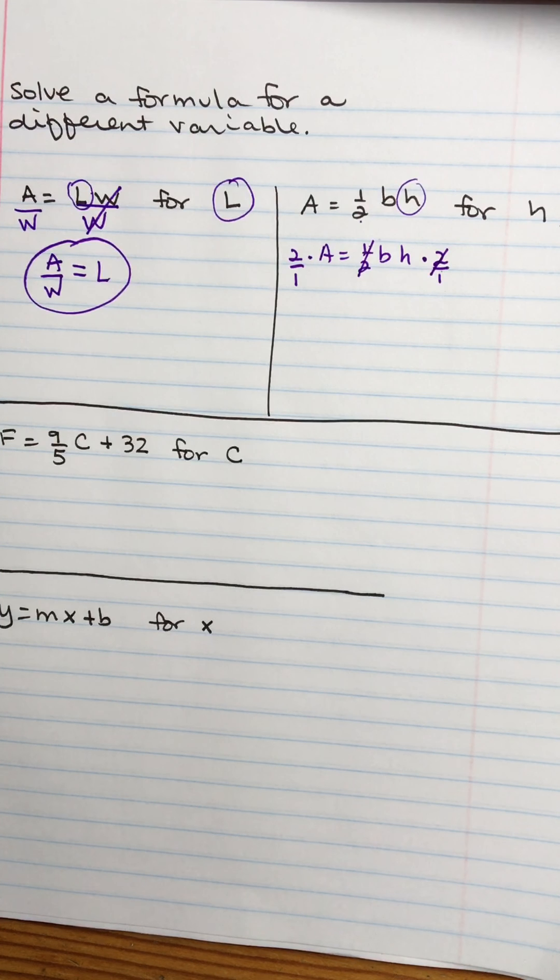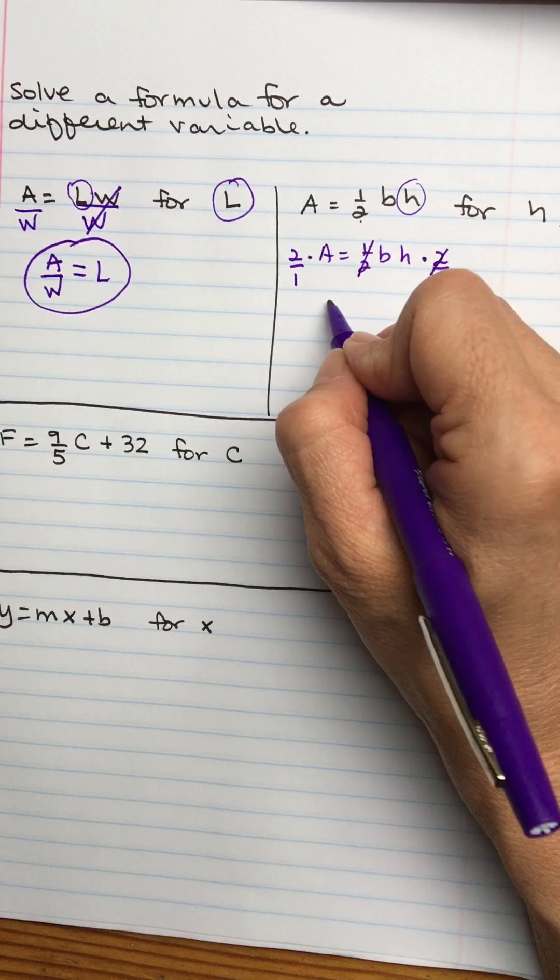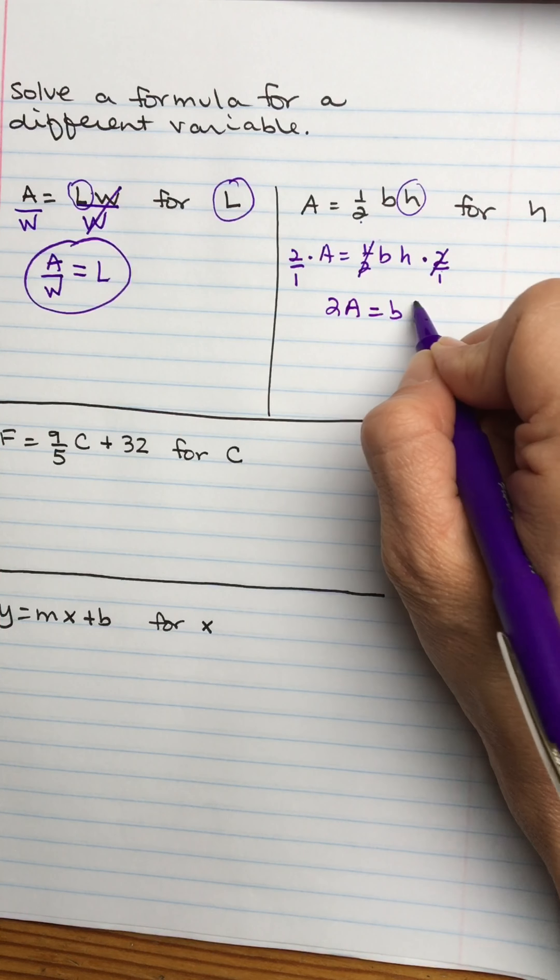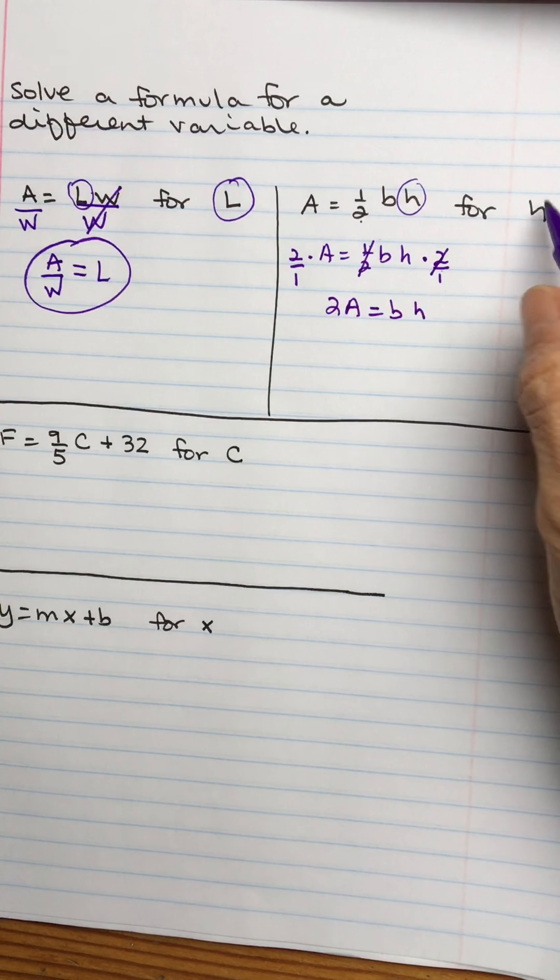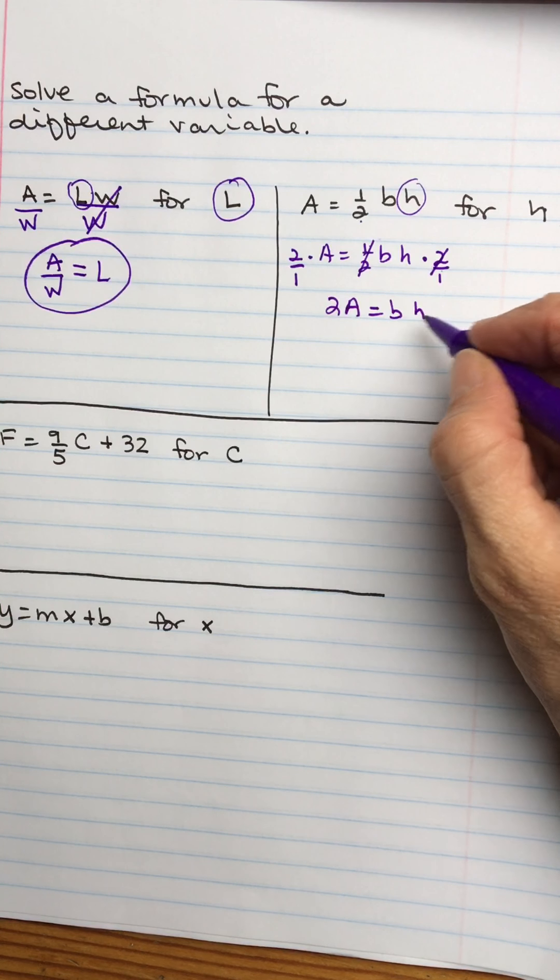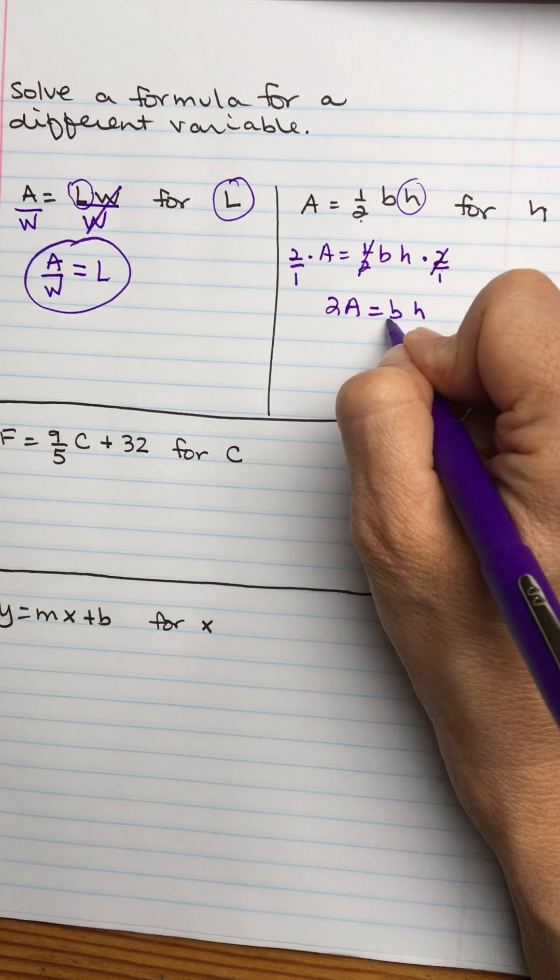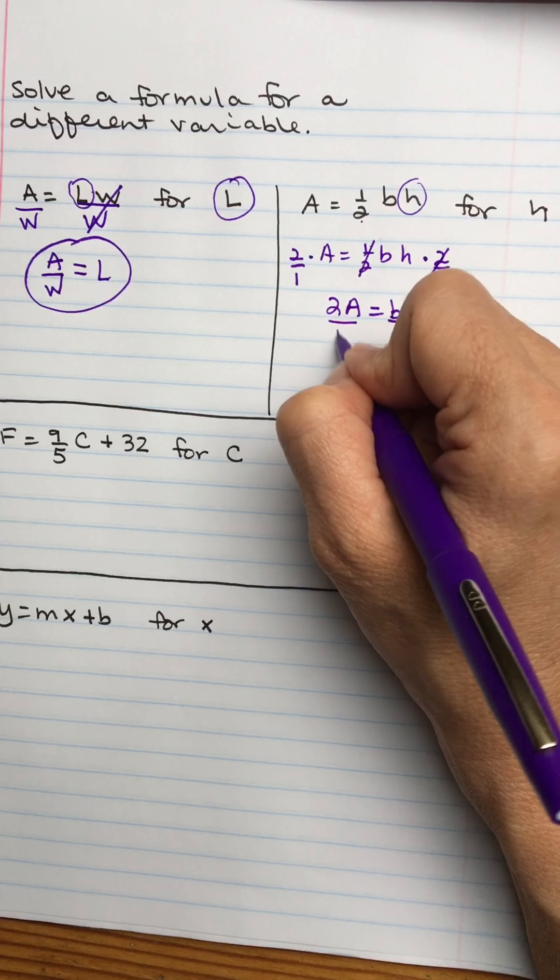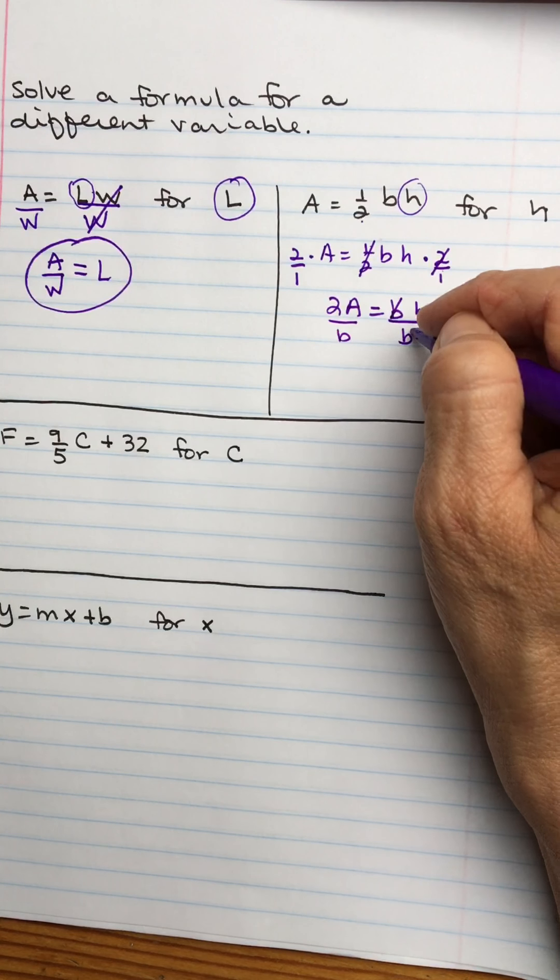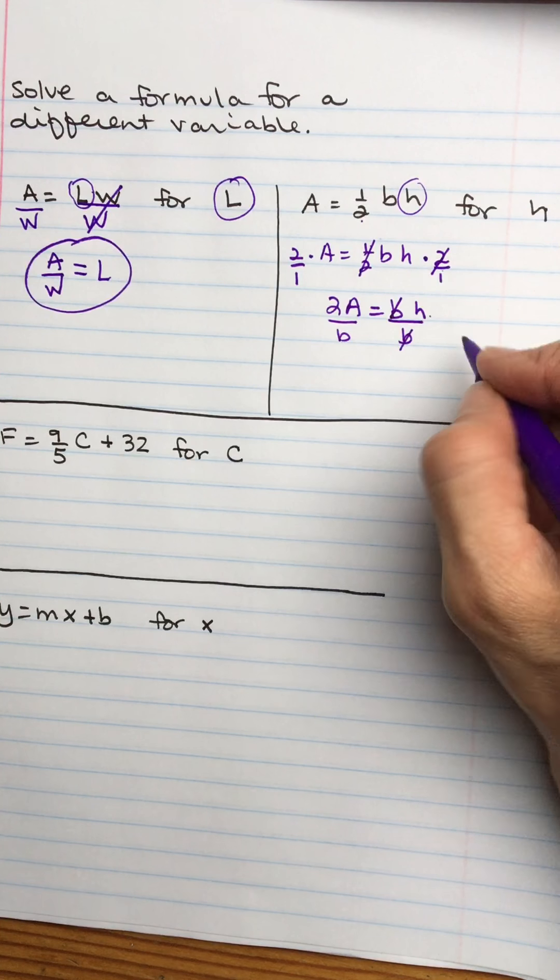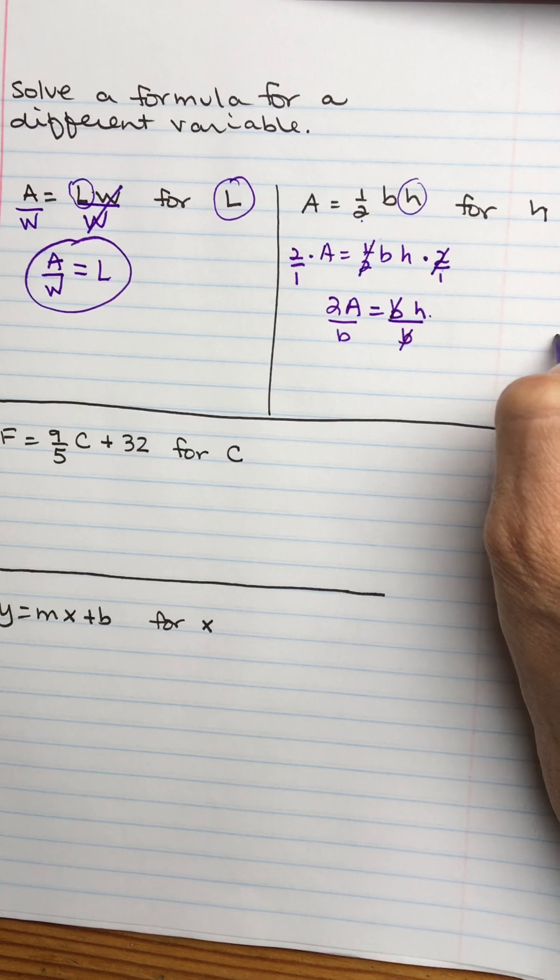So the two over one times the one over two, those are reciprocals. So when they multiply, it becomes one. So now the one half is gone and I am at two A equals B times H. Remember I wanted to get H by itself. Now I have B times H, so I'm going to get rid of the B by dividing both sides, because I have to do the same thing to both sides, by the B.